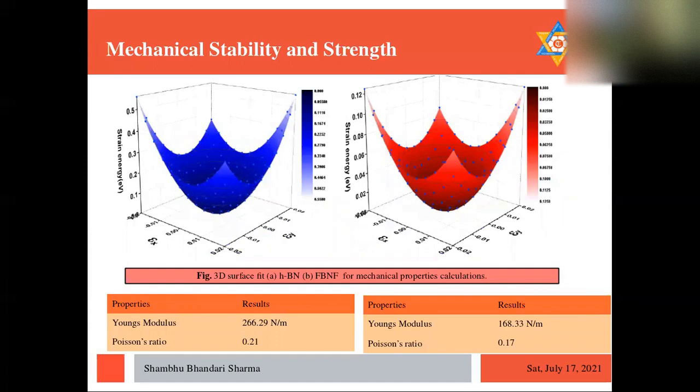And here is the mechanical stability and strength. We calculated the elastic constant using the strain and strain energy relations. We see there the strain along x-axis is epsilon x, strain along y-axis is epsilon y, and the strain energy distribution clearly in there for h-BN and F-h-BN clearly on the picture.